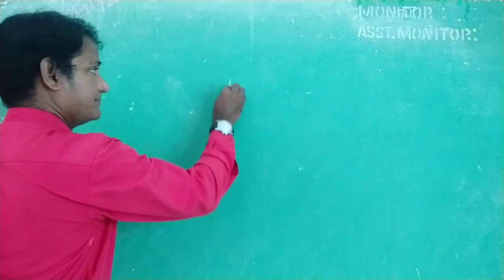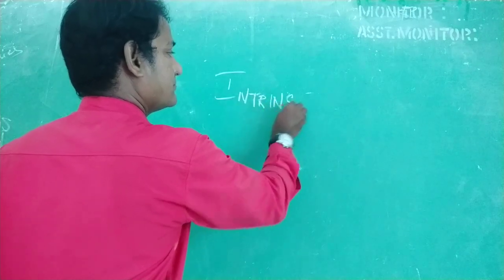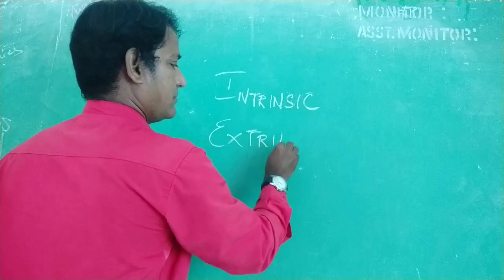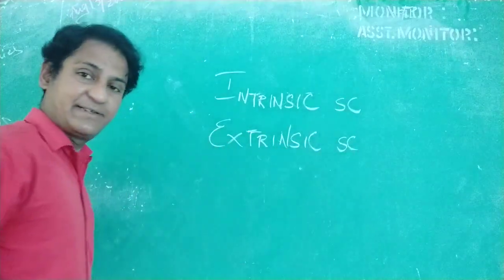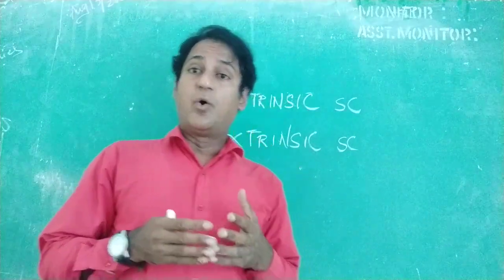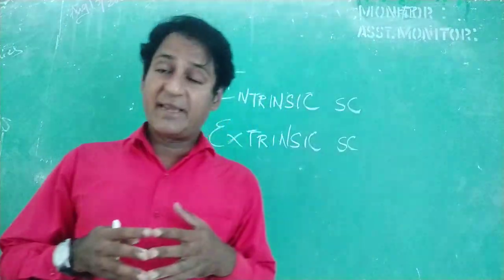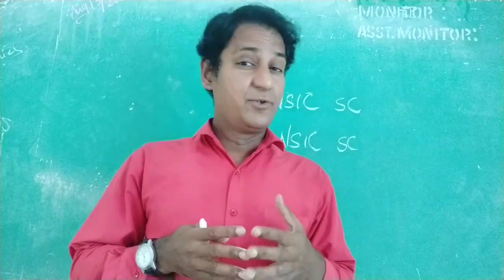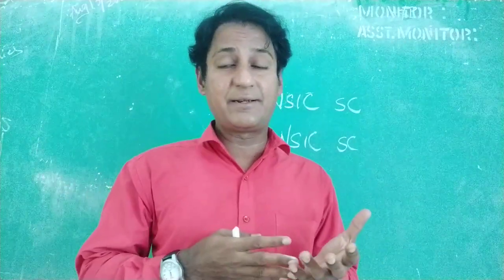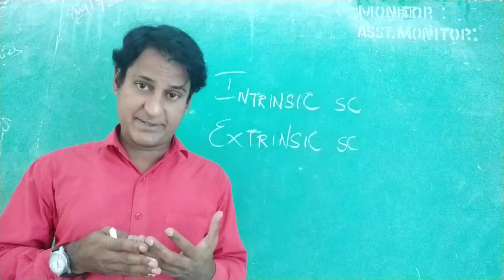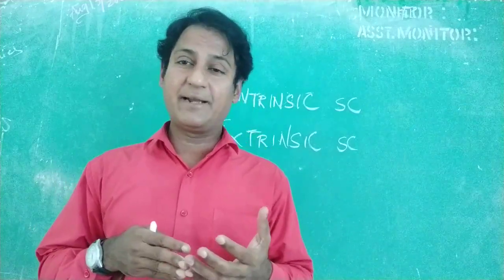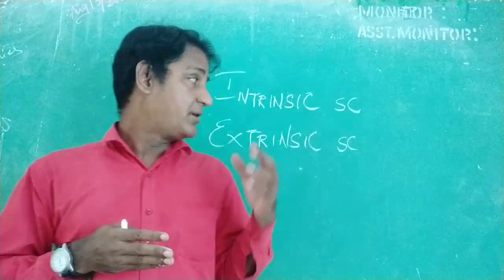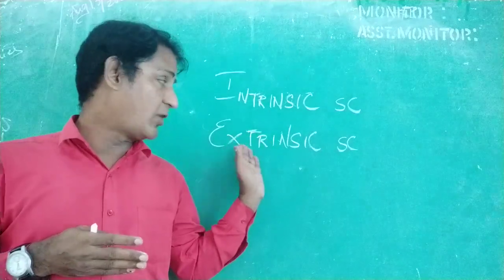We know there are two types of semiconductors: intrinsic and extrinsic semiconductors. An intrinsic semiconductor is a pure semiconductor — one that hasn't been added with any impurity atoms. Those impurity atoms which are added to any pure semiconductor are called doping atoms or dopants.